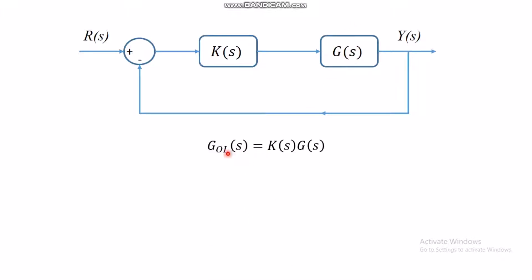The open loop transfer function is K(s) × G(s). If you don't remember this, I will post links to related videos in the description so you can refresh the basics of control systems.